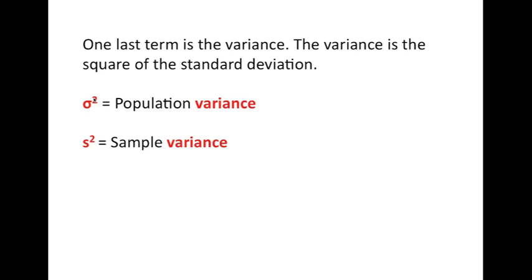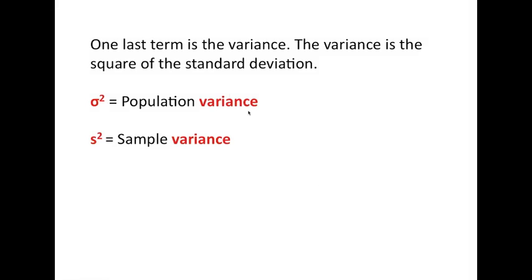The standard deviation squared was called the variance, and sigma squared is the variance of the population, and s squared is the variance of the sample. So we now have two really neat terms. One of the things that you really need to be careful here about is the relationship of the standard deviation to the variance.